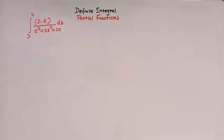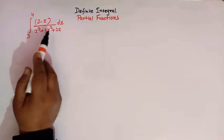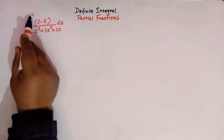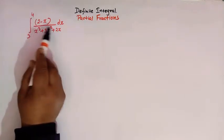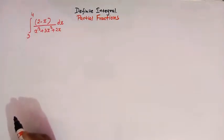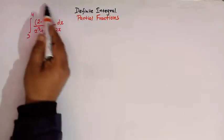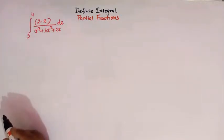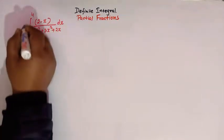Hello viewers. In today's class we are going to discuss one important definite integral in which we have to use the method of partial fractions. So here we have the integral from 3 to 4 of (2 minus x) over (x cubed plus 3x squared plus 2x). So we have to find the value of this definite integral. So let us start.